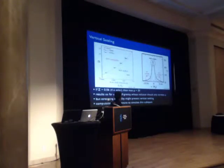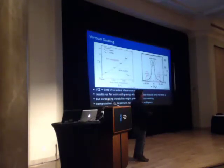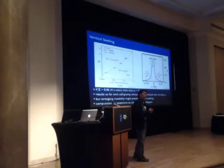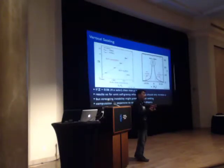The midplane layer is still susceptible to other forms of turbulence, namely the streaming instability. It remains to be seen whether this outcome is achievable even when accounting for the streaming instability for particles whose stopping times are on the order of 10⁻³. That, I think, is where the interesting parameter space is.